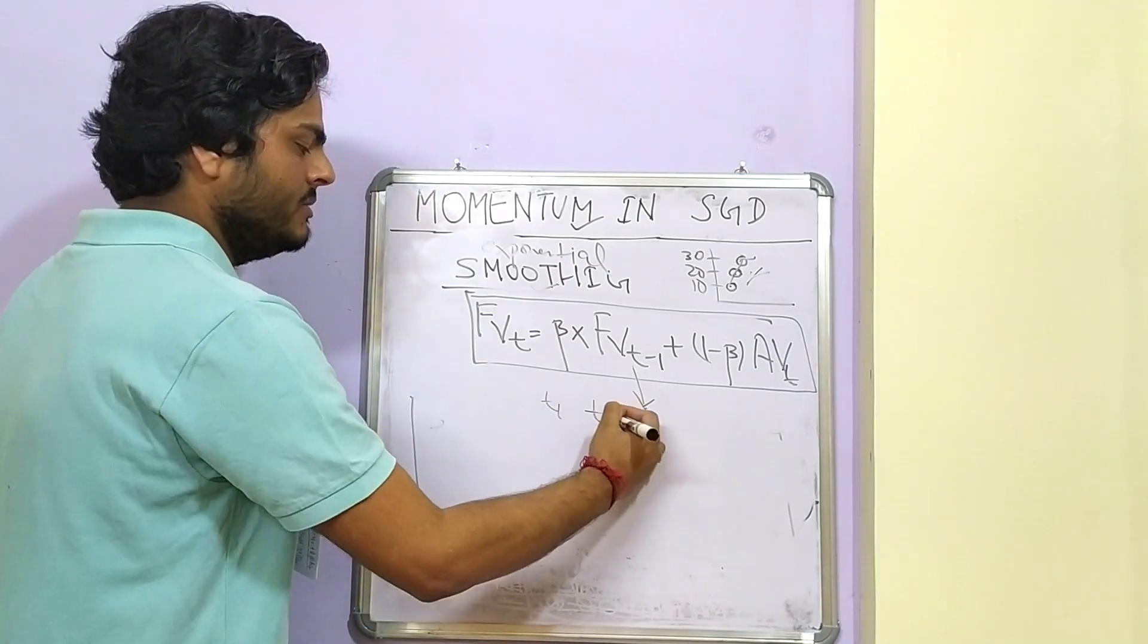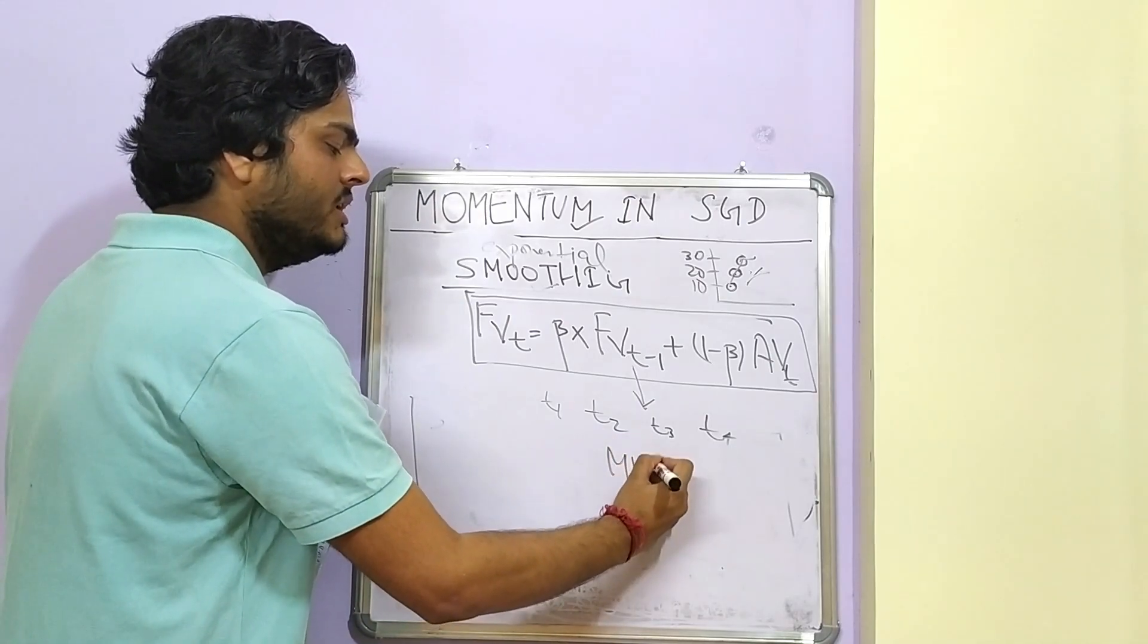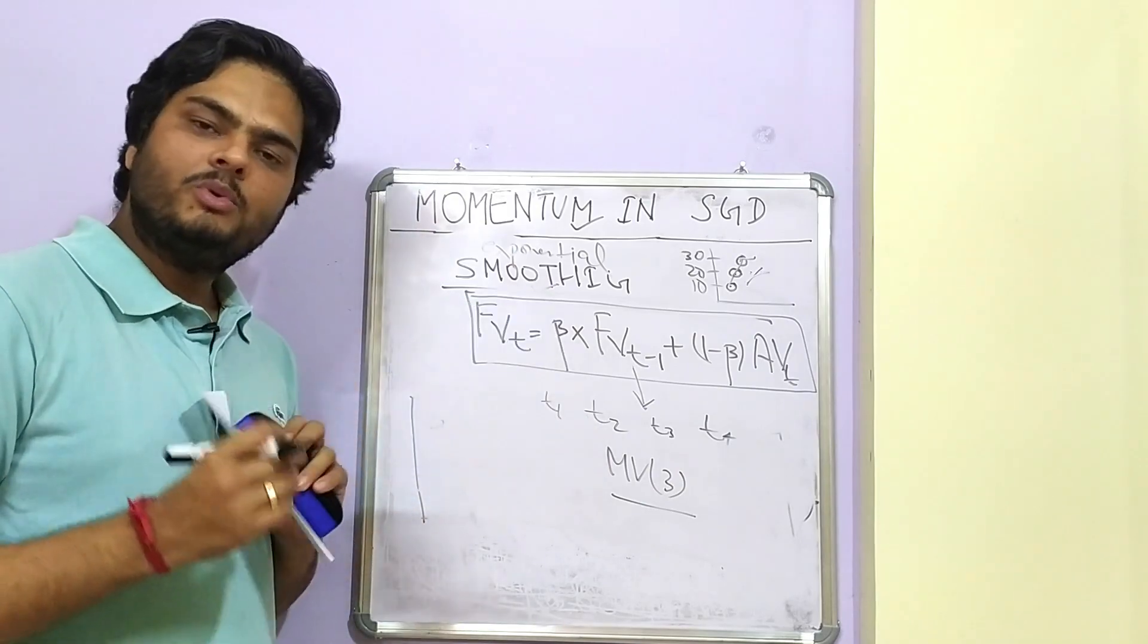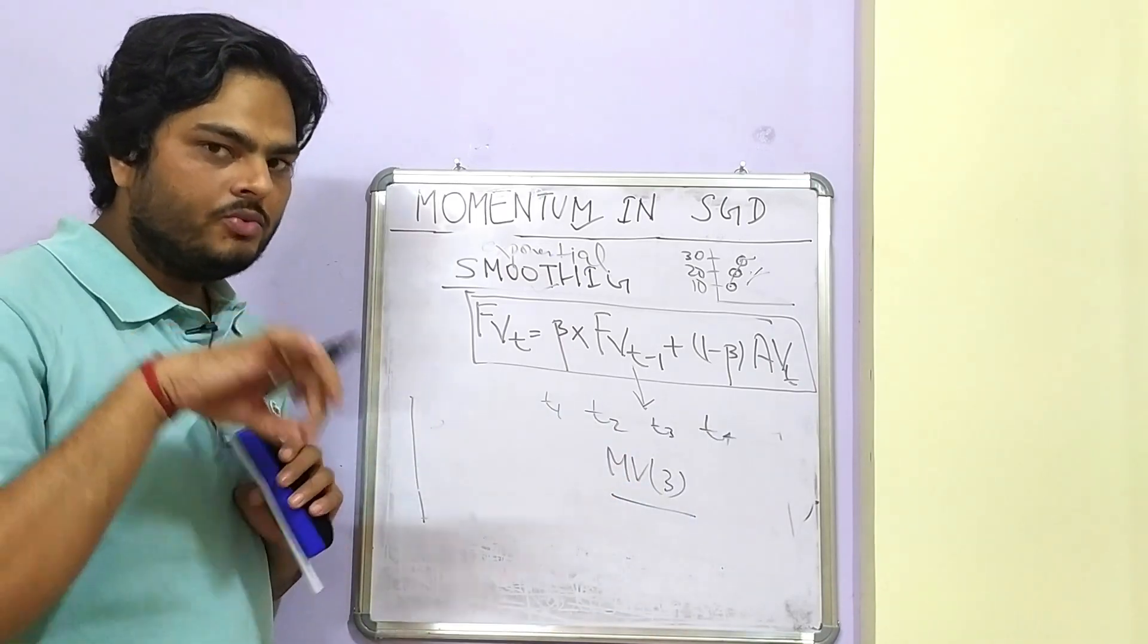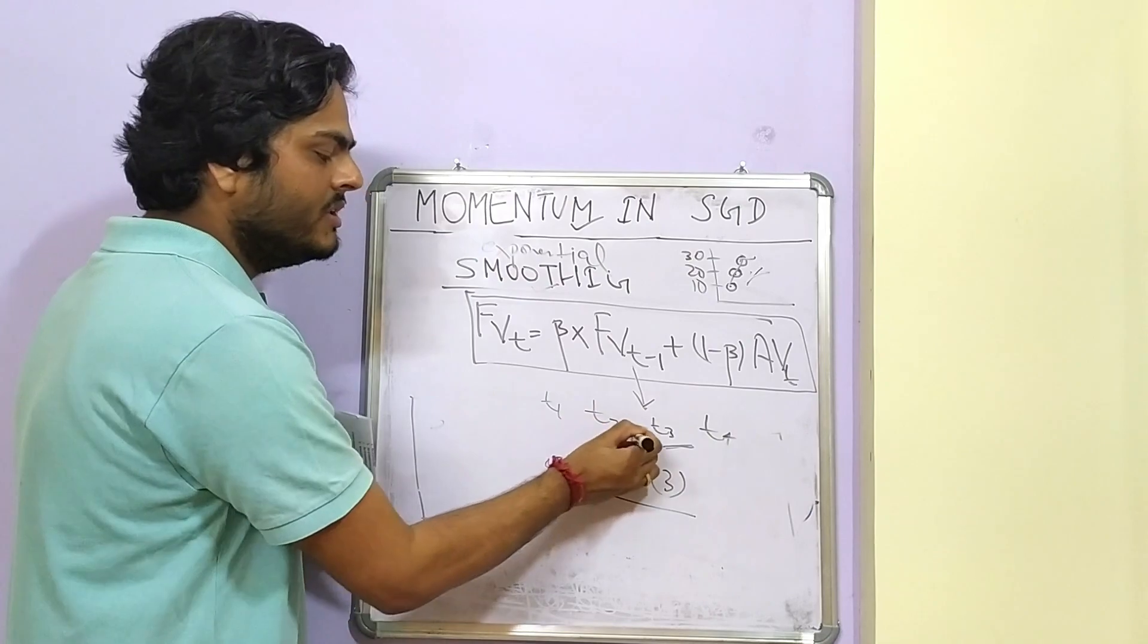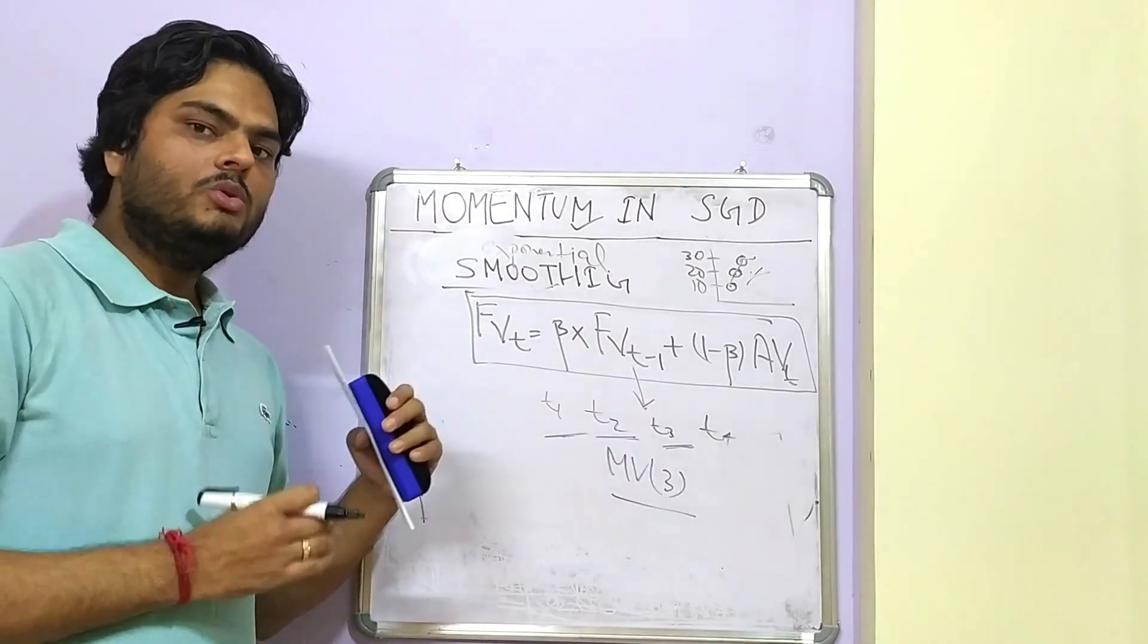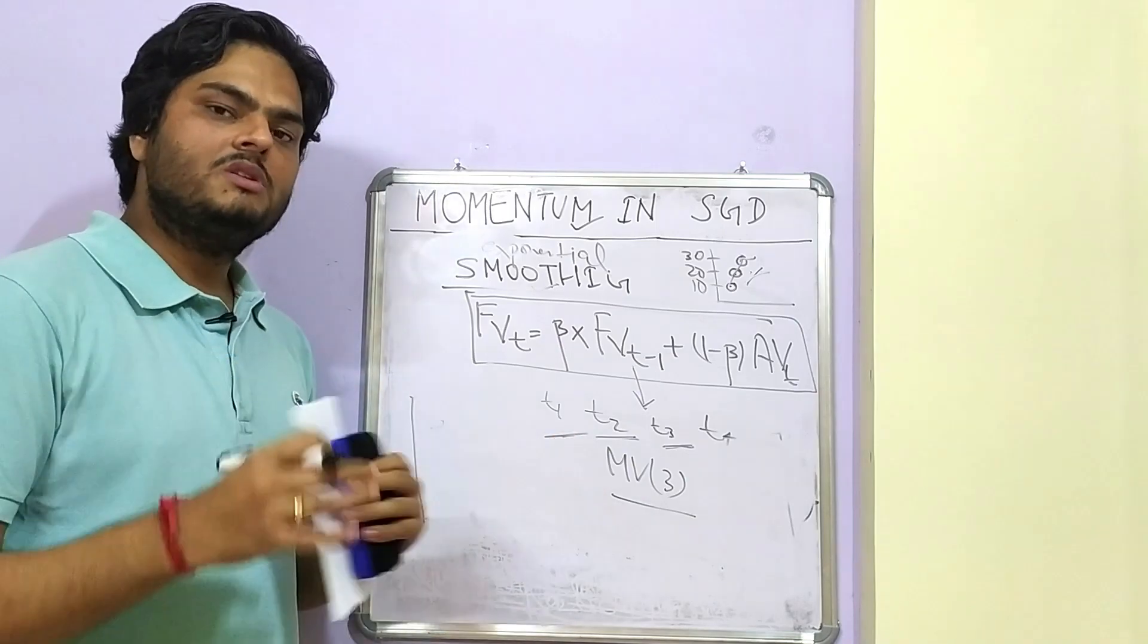When you expand this, what you will observe is recent observations are getting more weight. So what I mean by that, let us say there are four time intervals t1, t2, t3, t4. If we consider the moving average of window 3, in plain moving average we will take moving average of t1, t2, t3. But if we apply exponential smoothing, one weight will be assigned to all these numbers before calculating average. And that weight will be assigned in such a way that nearest value will be given highest weight. And this will be given weight less than that and this will be given weight less than that. If you expand this equation, you will observe the same pattern here as well. So recent observations are given more weight and observations which are far are given less weight. But all of the observations will be considered.